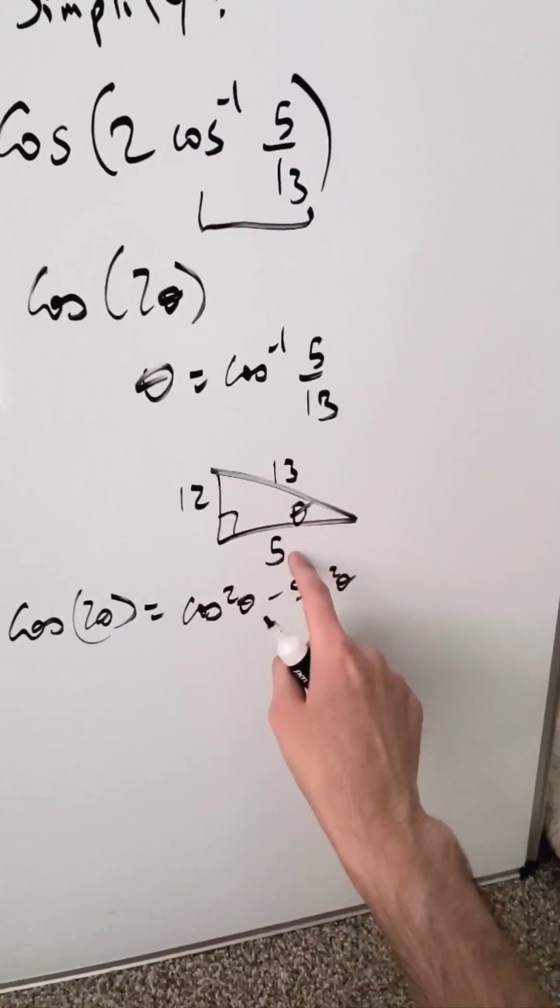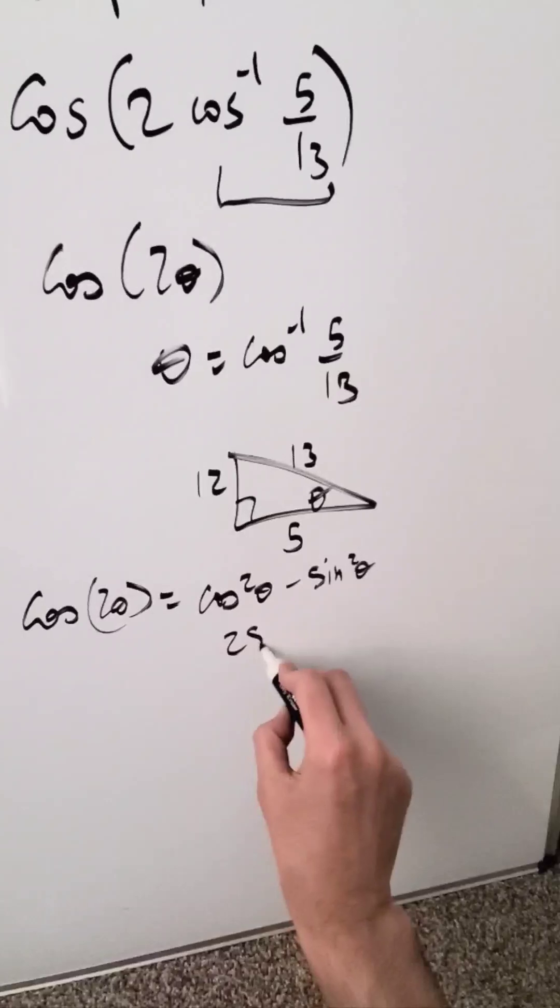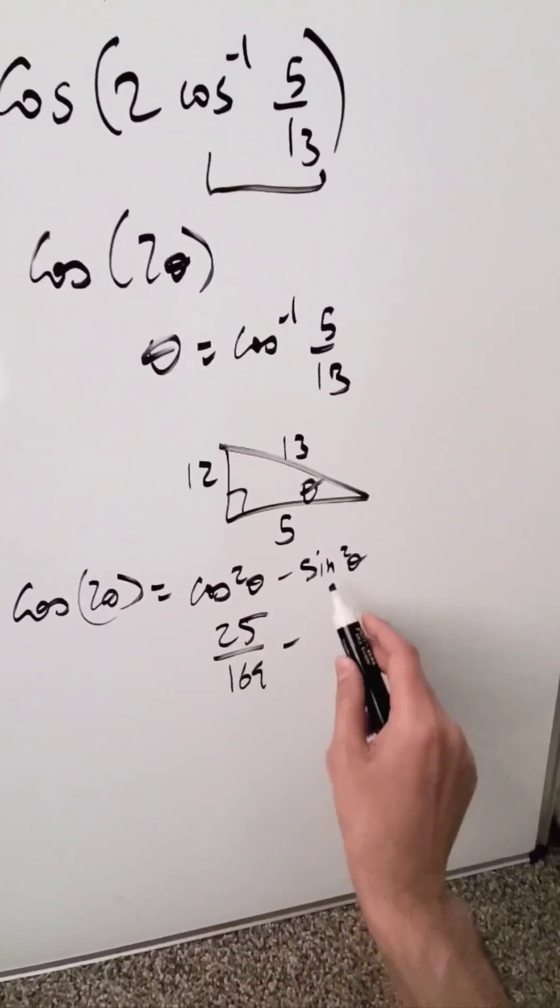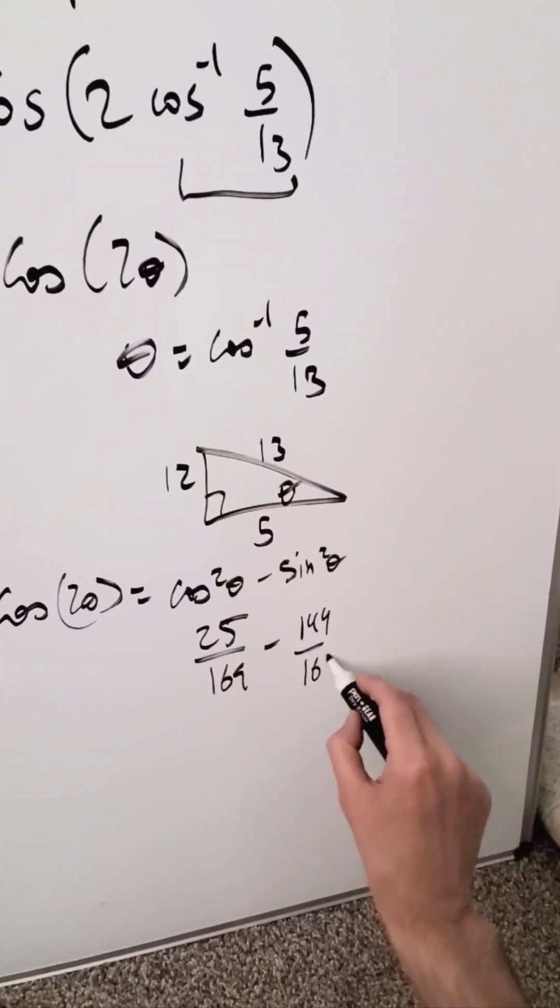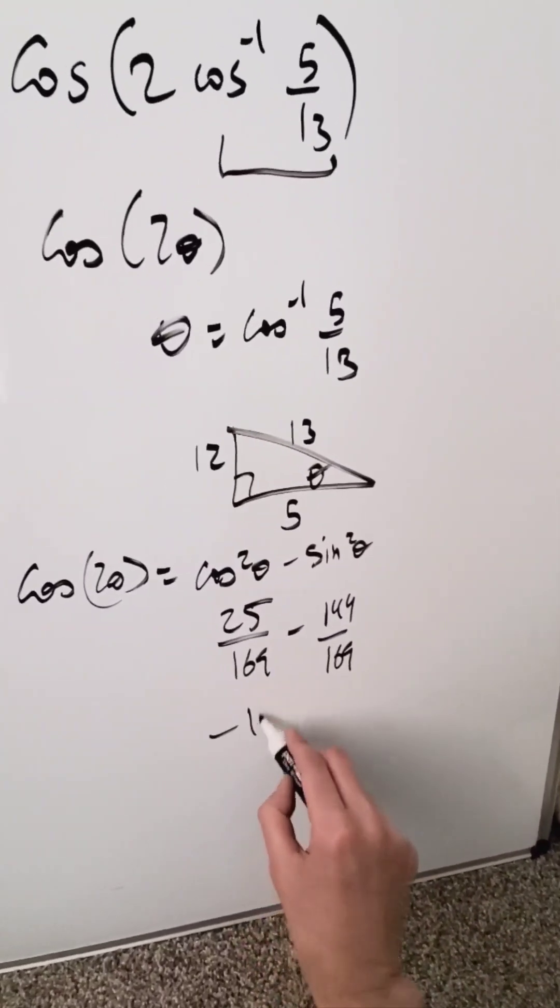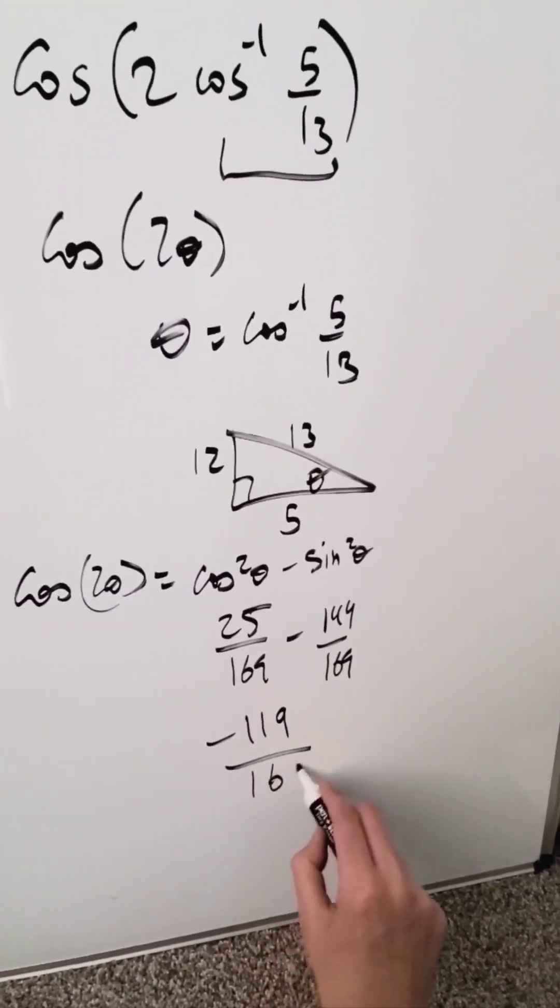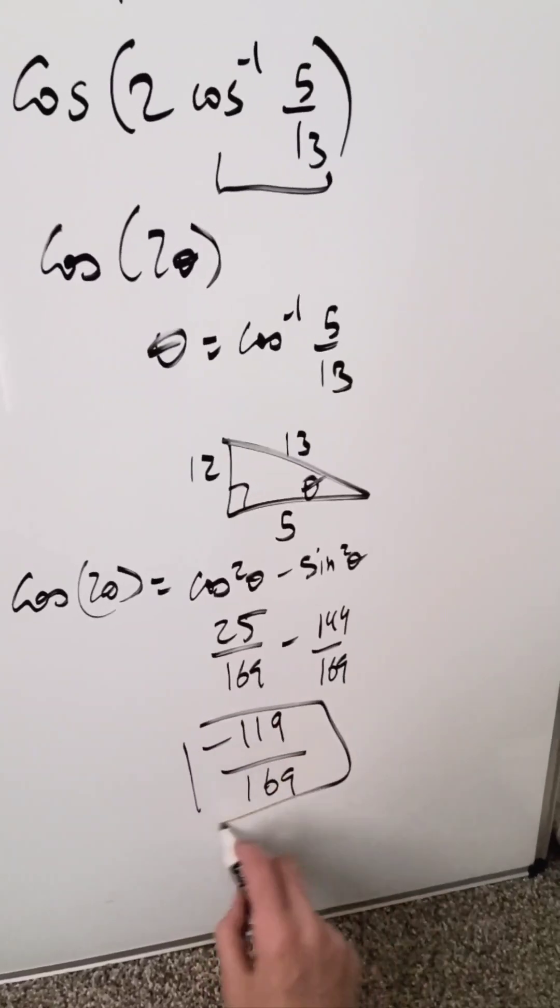Cosine squared theta is 5 over 13 whole squared, which is 25 over 169. Sine squared theta with regards to this is 12 over 13 whole squared, 144 over 169. Through this computation you have minus 119 over 169, and this right here represents your answer.